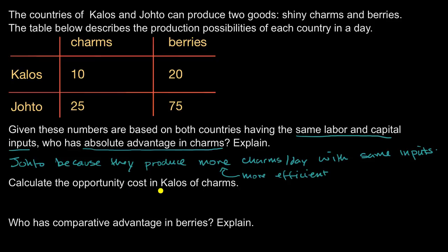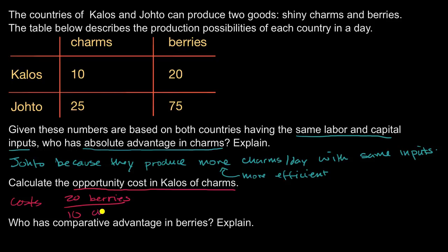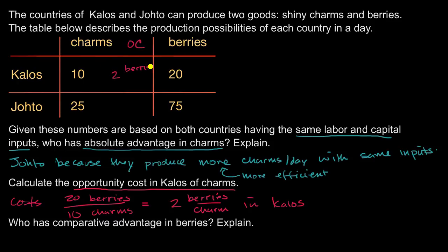Calculate the opportunity cost in Kalos of charms. When Kalos decides to produce 10 charms, they're trading off 20 berries. Another way of thinking about it: it costs them 20 berries to produce 10 charms, which equals two berries per charm. So the opportunity cost in Kalos is two berries per charm.